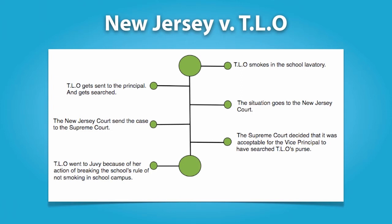In TLO, a principal searched the purse of a high school student when he suspected she had been smoking in a school laboratory, which was a violation of school policy. In searching the student's purse, he discovered a small amount of marijuana, a number of empty plastic bags, and a large number of $1 bills. The principal notified the student's parents and the police, and TLO subsequently confessed that she had been selling marijuana at the high school. The state subsequently brought delinquency charges against TLO in juvenile court, and TLO moved to suppress the evidence found in her purse, as well as her confession, which she argued was tainted by an unlawful, warrantless search.